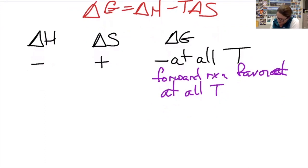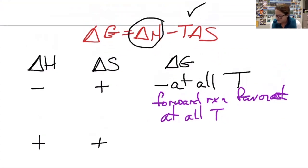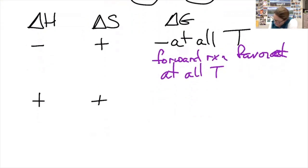The next possibility is if they're both positive. If I have a positive number here and I'm subtracting off a positive number, I can get either a positive or a negative answer. The bigger T is, the more likely it is that I'm going to get a negative value for delta G. So we get a negative delta G at high temperatures. What high is depends on the reaction. The reaction won't be favored, and then if I heat it up past a certain point, it will be favored. So it's favored at high temps.